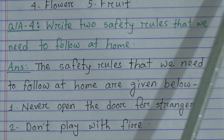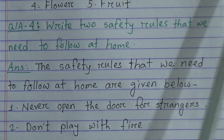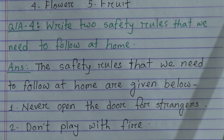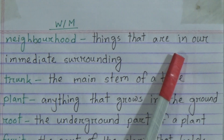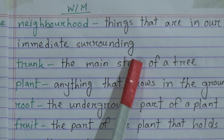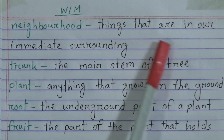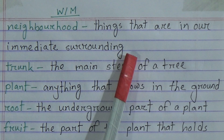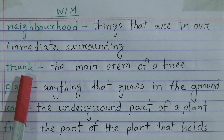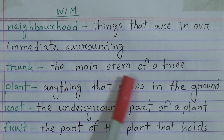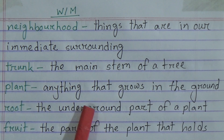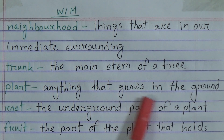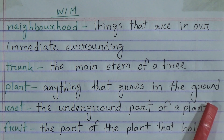Now, word meanings. Neighborhood means things that are in our immediate surrounding. Trunk means the main stem of a tree. Plant means anything that grows in the ground.